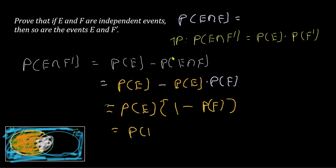So this is P(E), and what is 1 minus P(F)? It has to be P(F complement). That's what it means to say. This is equal to the RHS here. Hence proved.